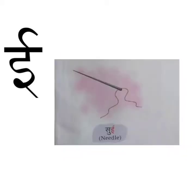E say sui. Sui means needle. Needle is a sharp object. It is used to stitch clothes. Now let's learn how to write badi e.